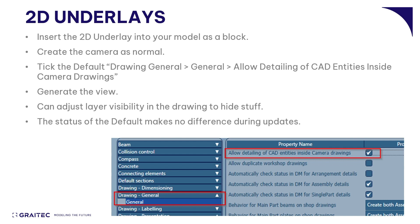You don't necessarily want your 2D underlay in every single GA view, so when you're generating other views you can turn that default off again and it won't make any difference. Each view remembers whether that default was on or off when that particular view was created, so you can update as much as you like and it won't upset them no matter what status that default was in at that point. Let's see it in action.